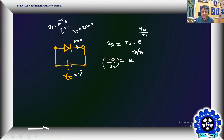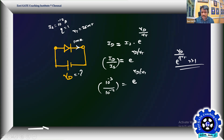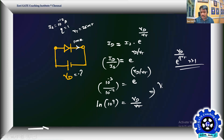In the examination there is no calculator provided — manual or online. You have to manipulate this number Vd, and that is the challenge. What is ID/Is? It's 10^−3 divided by 10^−12, which equals 10^9. That confirms e^(Vd/Vt) is very large, so the approximation is valid. Now applying ln on both sides: ln(10^9) = Vd/Vt. Therefore, the diode voltage is Vd = Vt × ln(10^9) = 25 mV × ln(10^9).